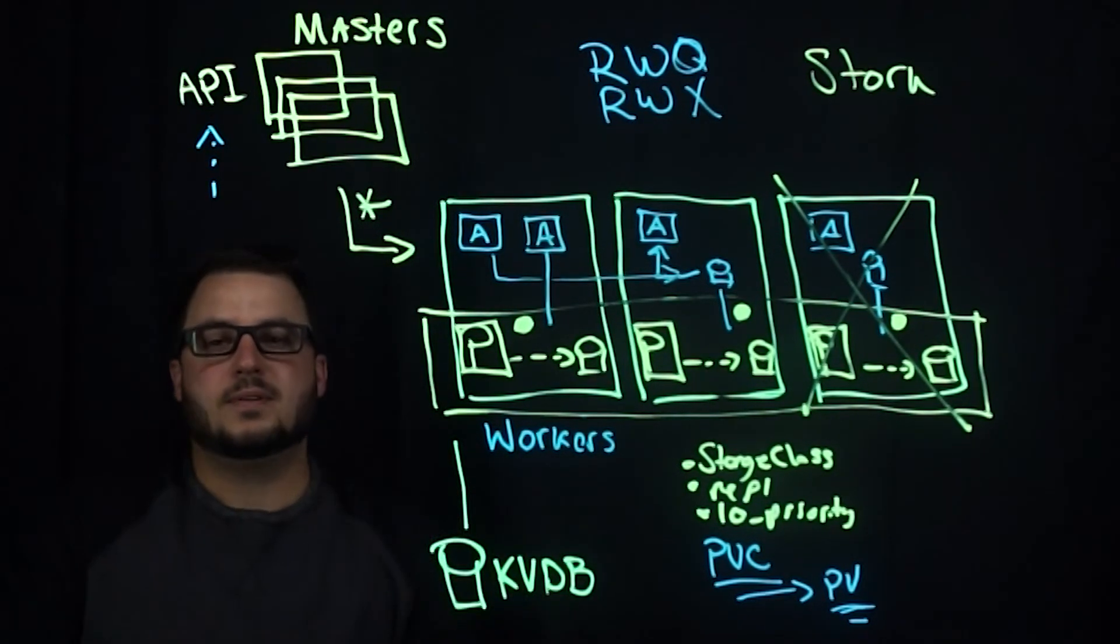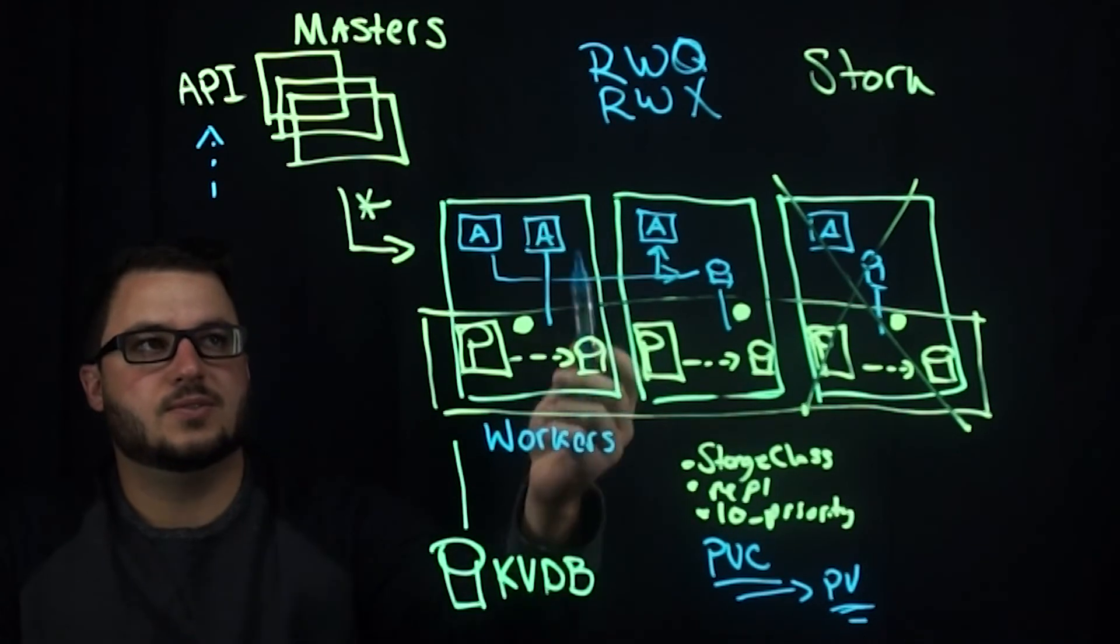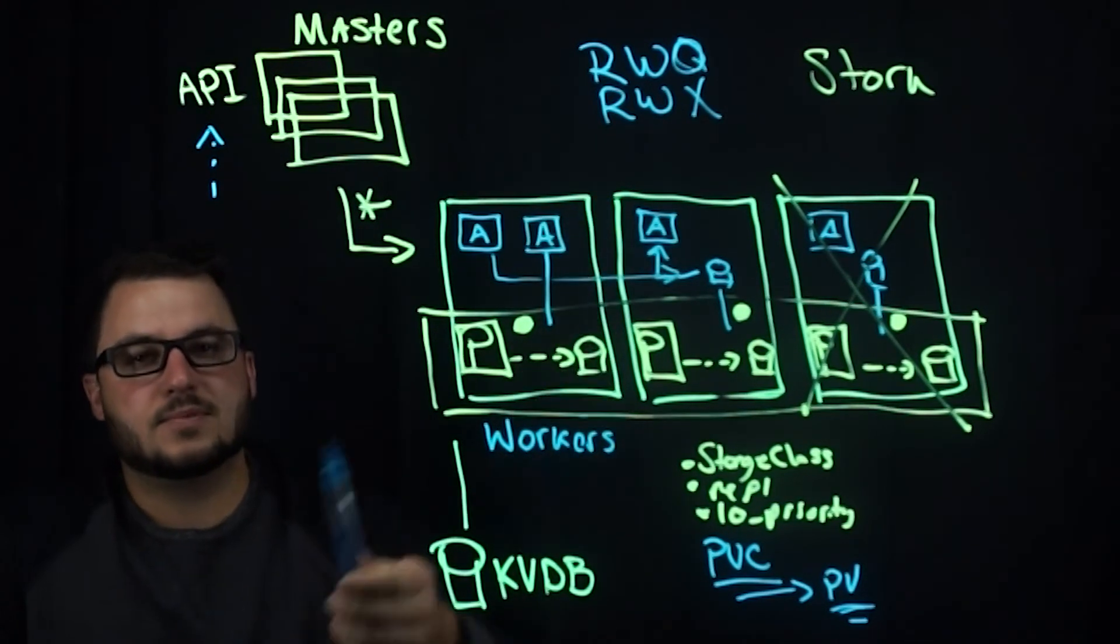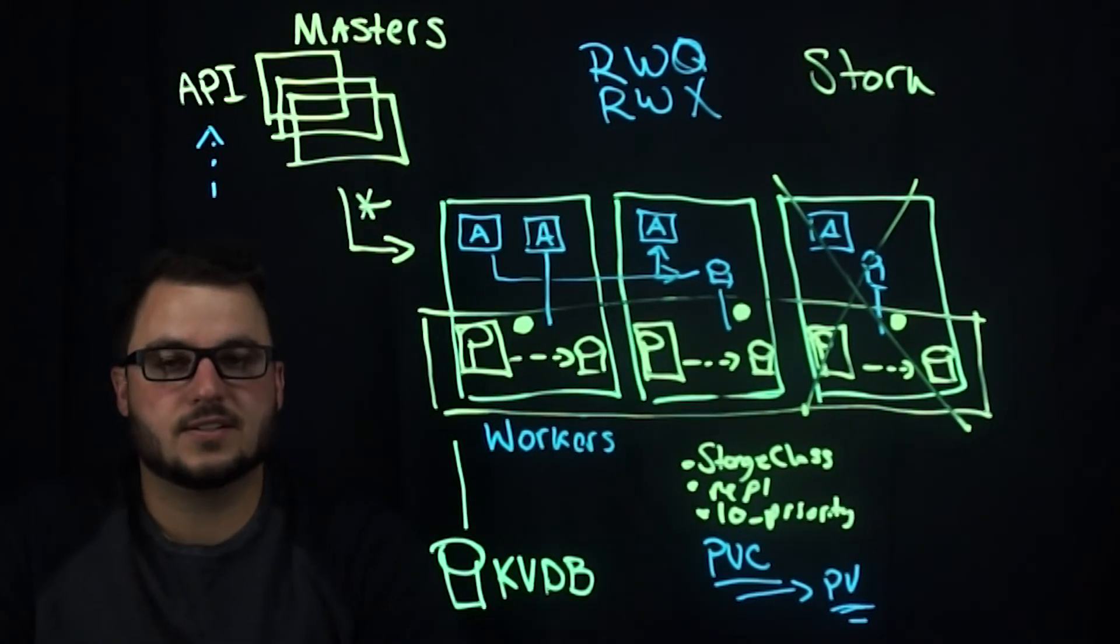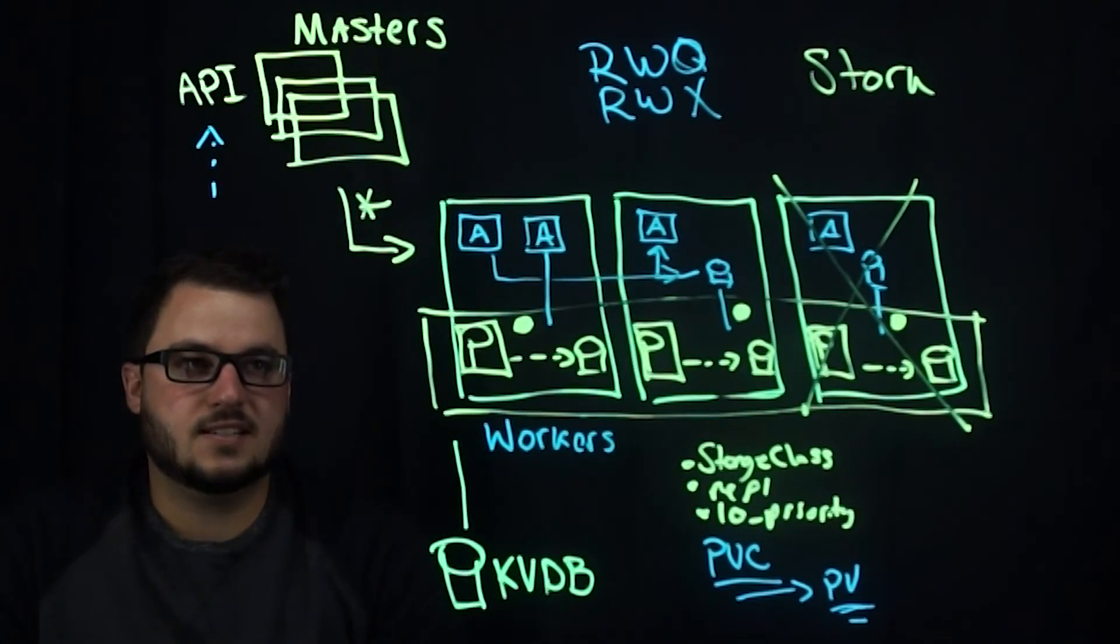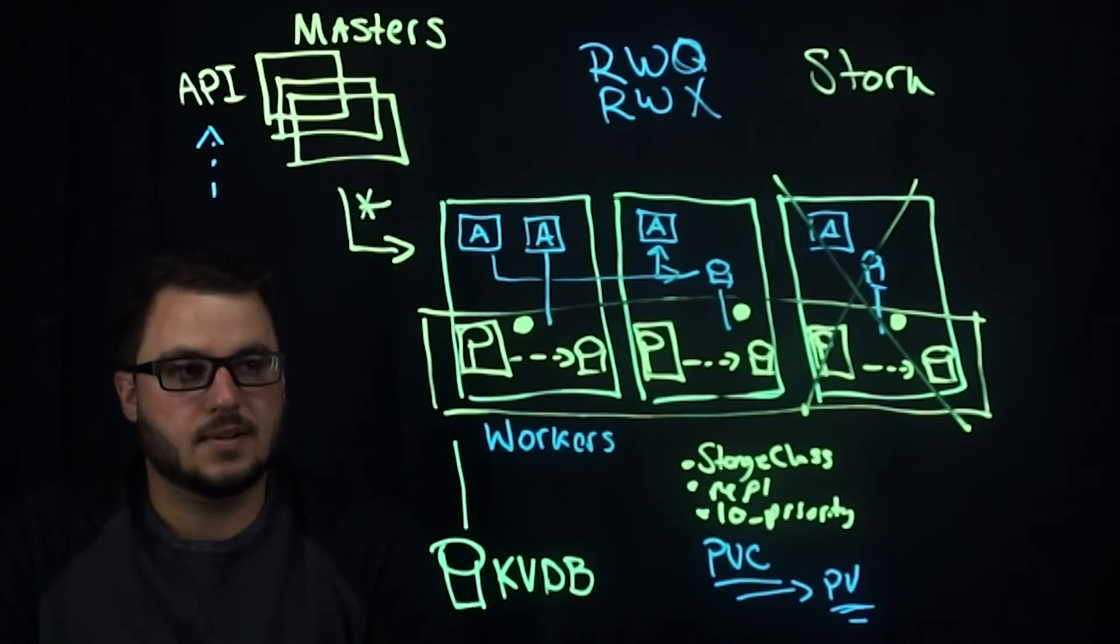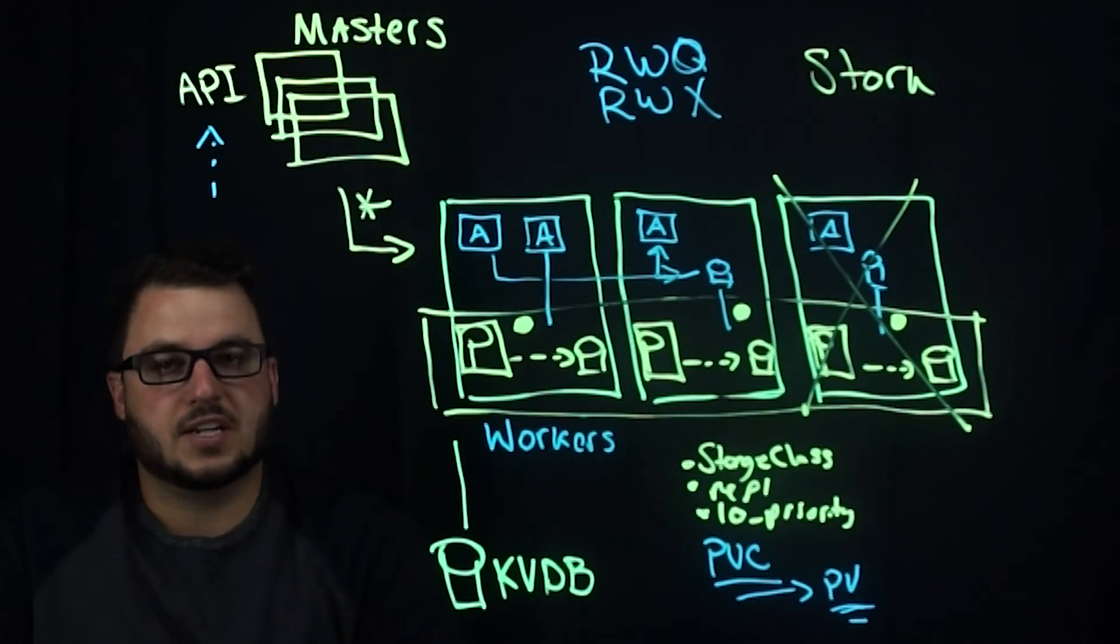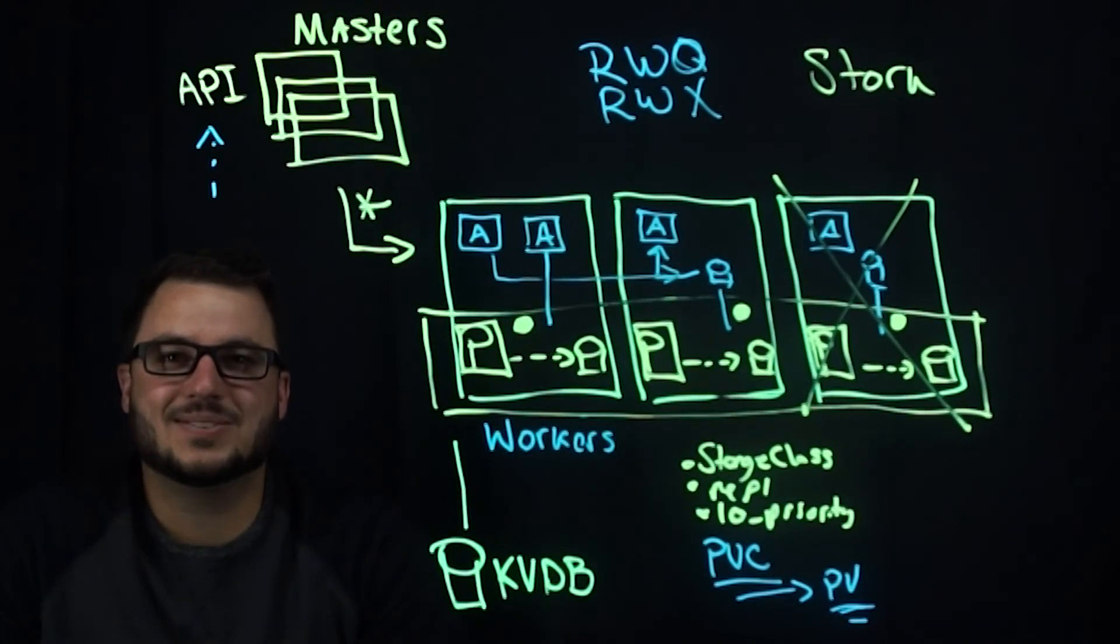I'm going to stop here. We're going to dig into the types of modes for volumes, what Stork actually is, and the parameters in future videos. This has been Portworx on Kubernetes and how it gets deployed. Again, I'll link to documentation like install.portworx.com and other dynamic provisioning documentation. Thanks for watching.